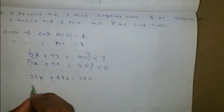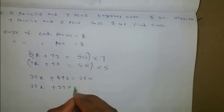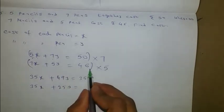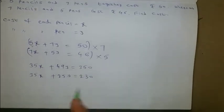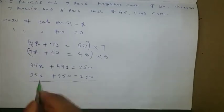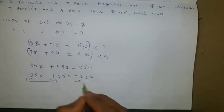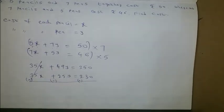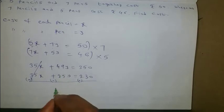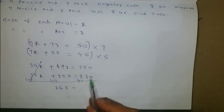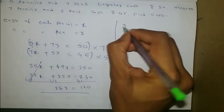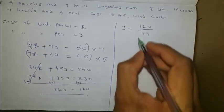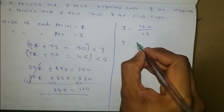Subtracting the second from the first: 35x cancels, 49y minus 25y gives 24y, and 350 minus 230 gives 120. So 24y equals 120, which gives y equals 5. y is the cost of each pen, so each pen costs 5 rupees.